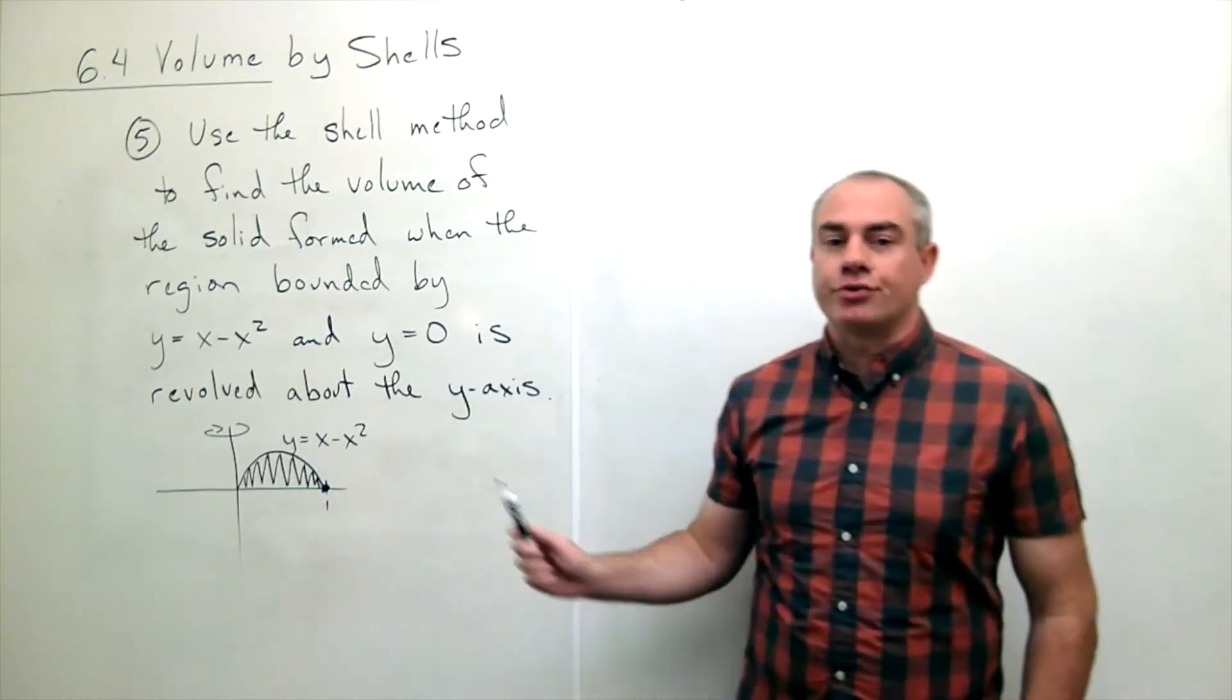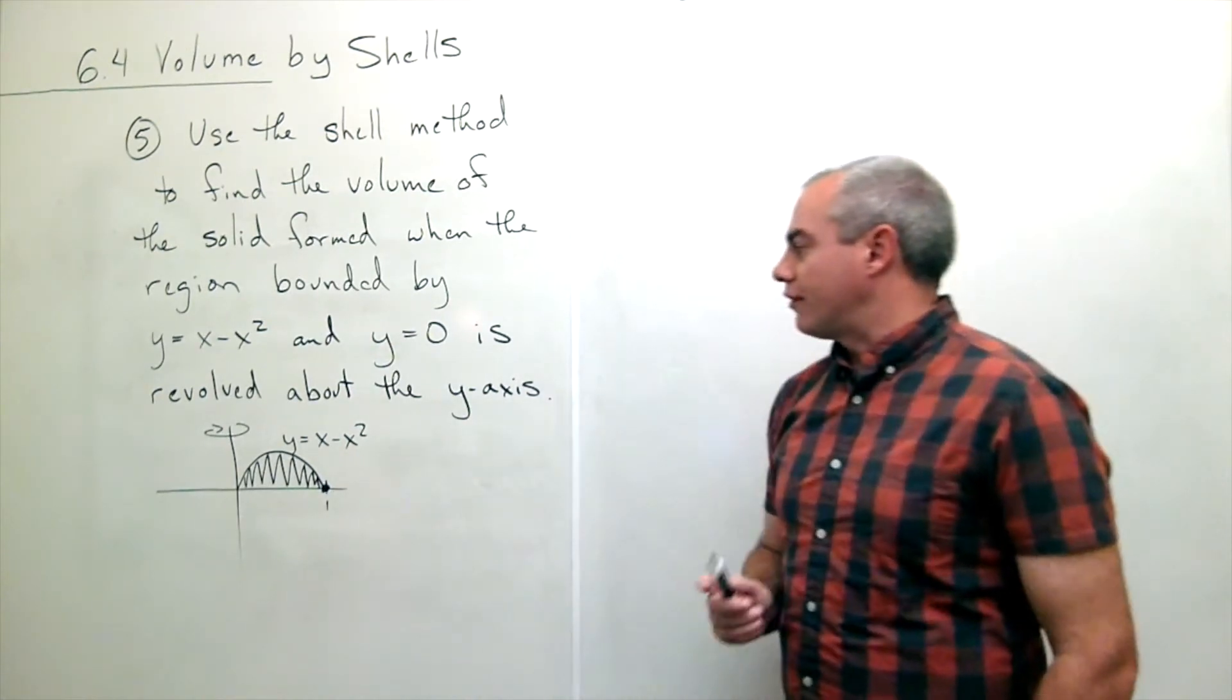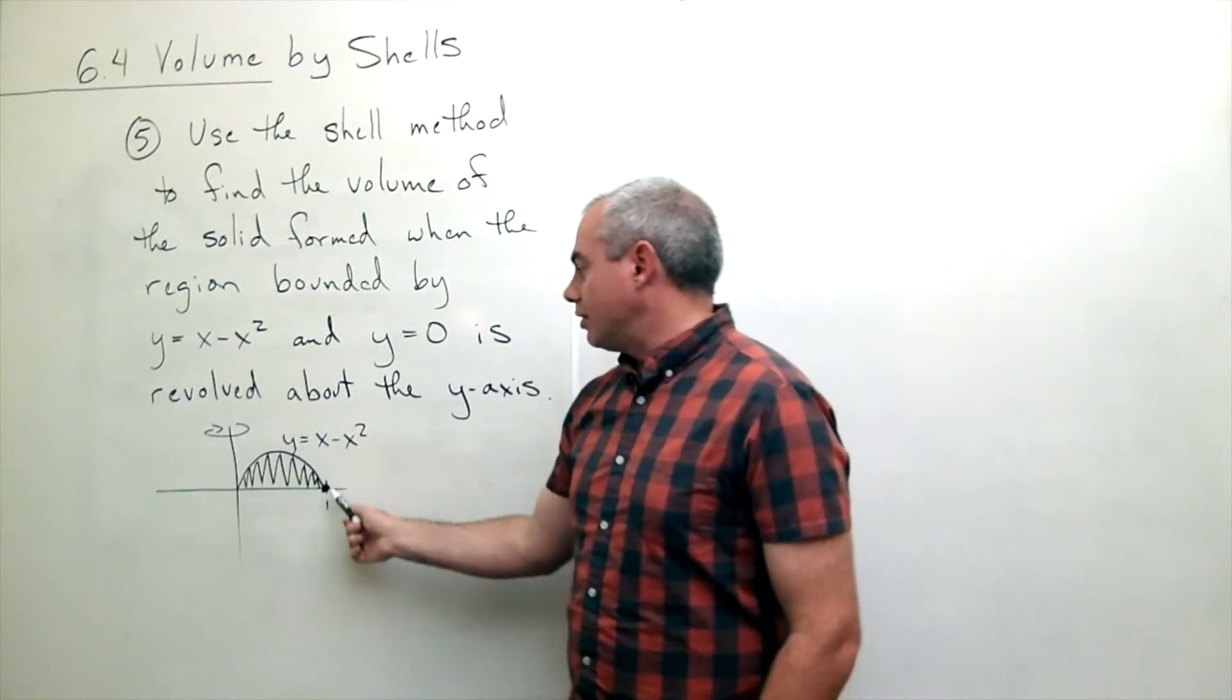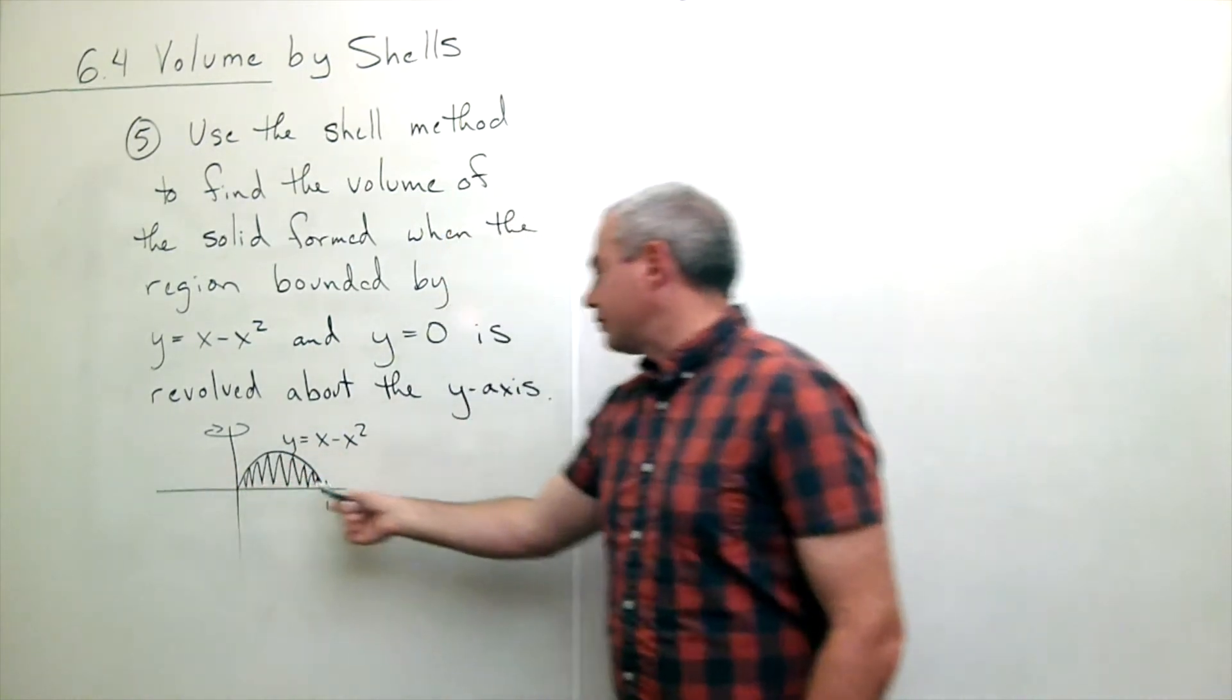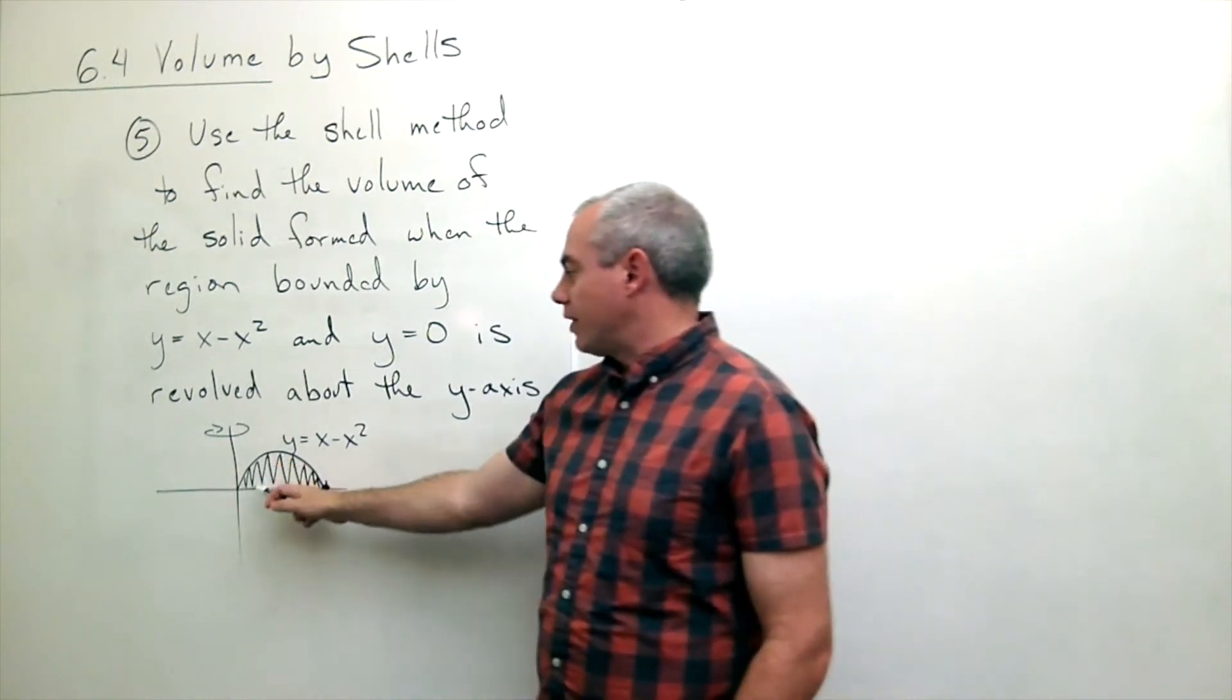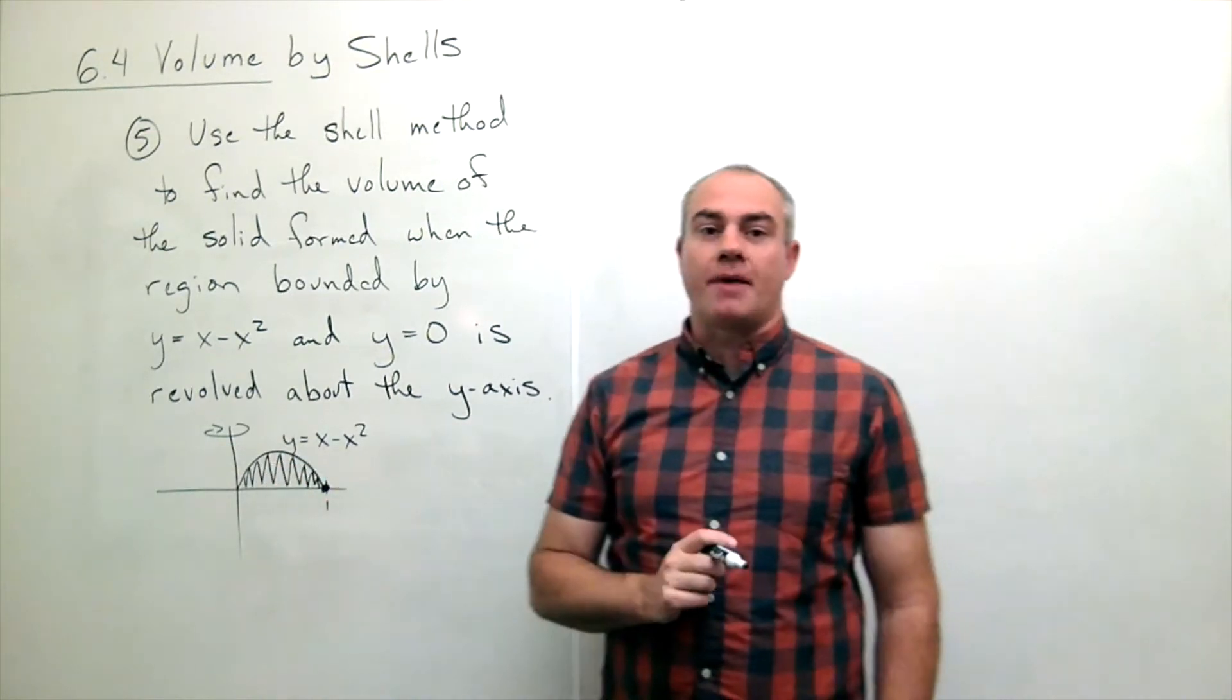And you'll notice that I drew the little region in already right here. Here's our parabola, y equals x minus x squared, y equals zero is the x axis and so we have this region that's trapped in between.